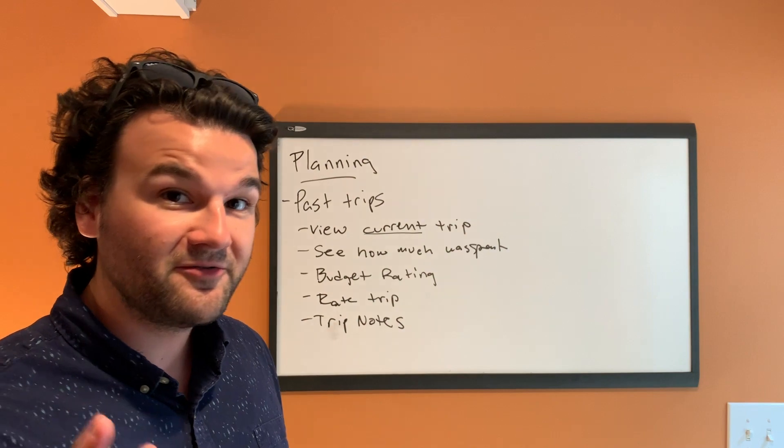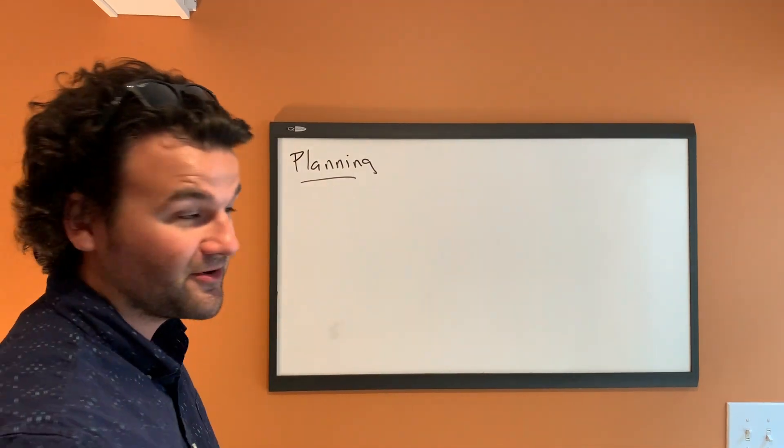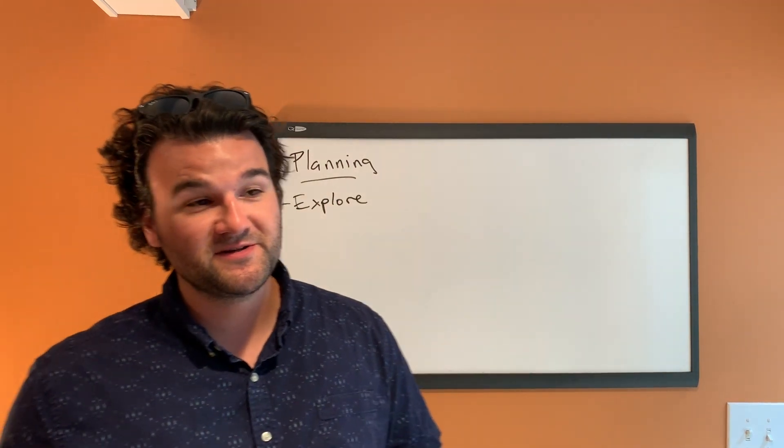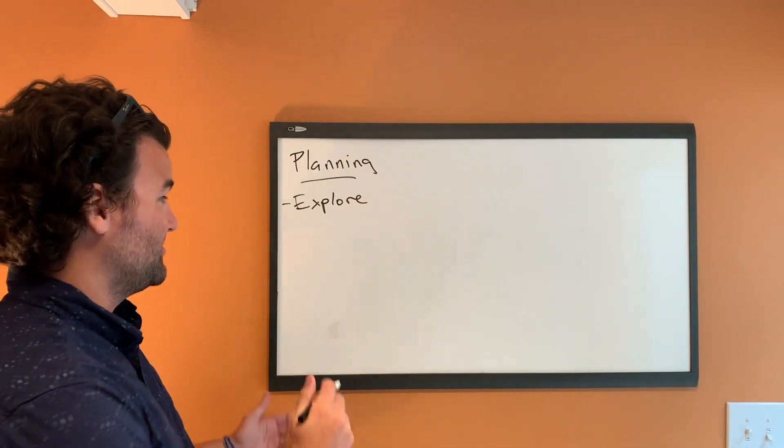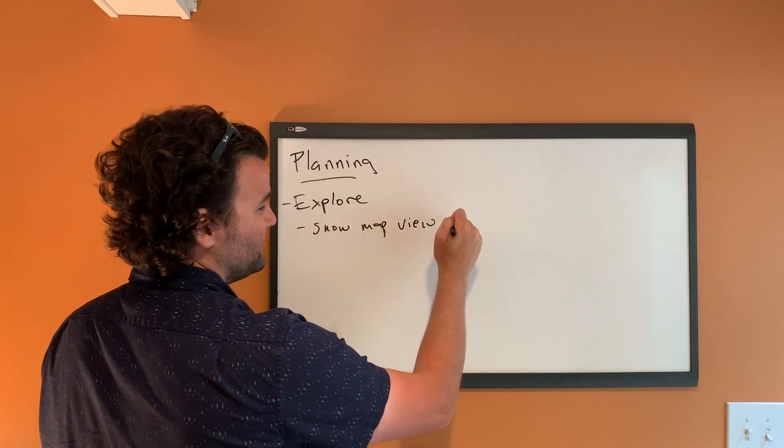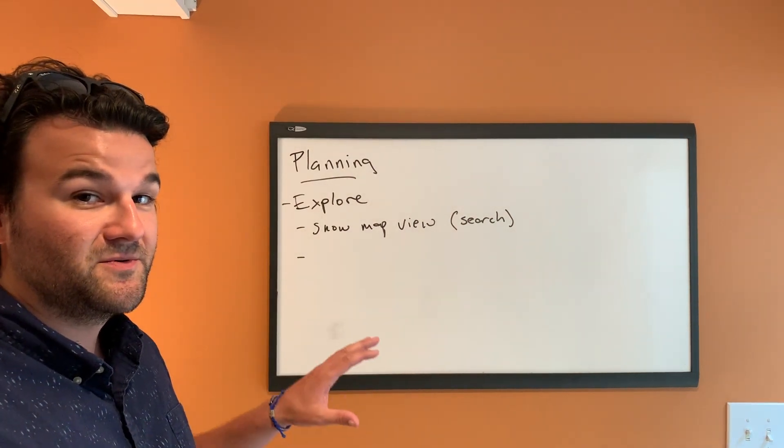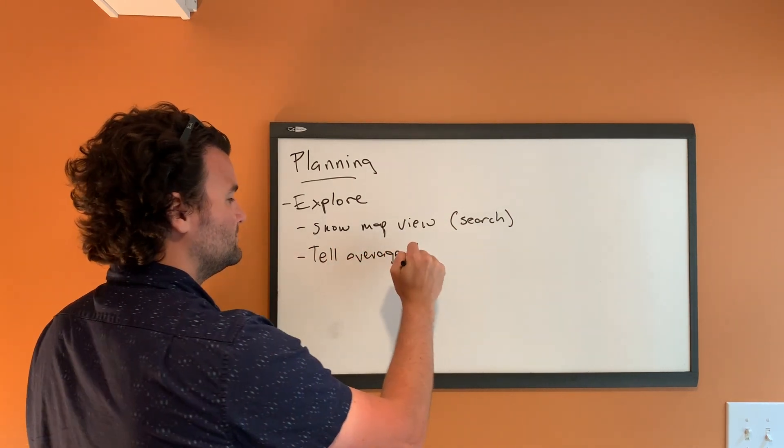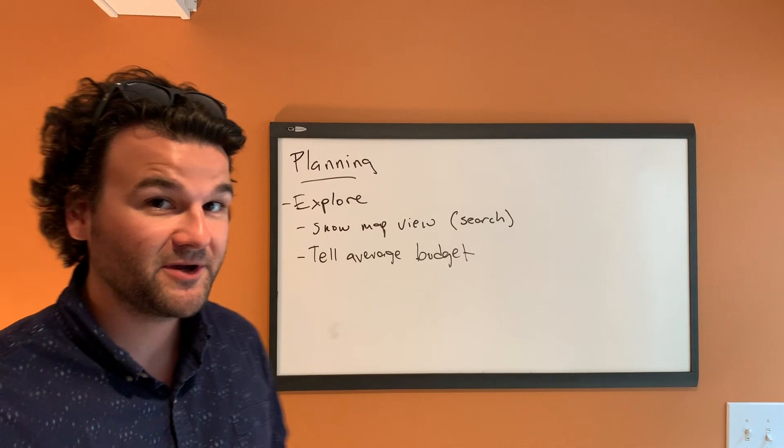So the first area was just creating a new trip. The second area here is looking at your current and past trips and updating that information. And then the third and final area for right now is going to be, we're going to call it explore for right now, but we might change the name. And what explore is going to do is going to give you data on a map of other people's average budgets. So explore is going to show map view or even a search, and that's going to give you an average budget.